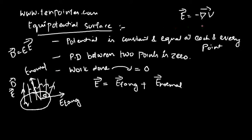Because V is constant, when you differentiate a constant with respect to X, Y, or Z, that results in zero. So the electric field is zero on the surface. But understand — it is not E that becomes equal to zero; it is E-tangential that becomes equal to zero. For an equipotential surface, E-tangential is equal to zero, because potential is constant on the surface.